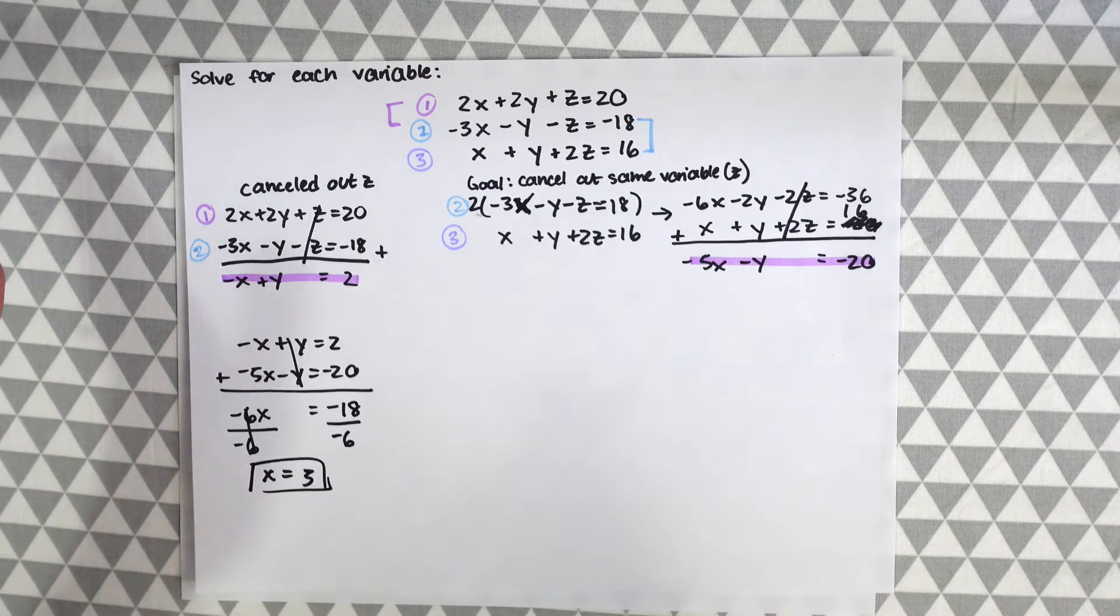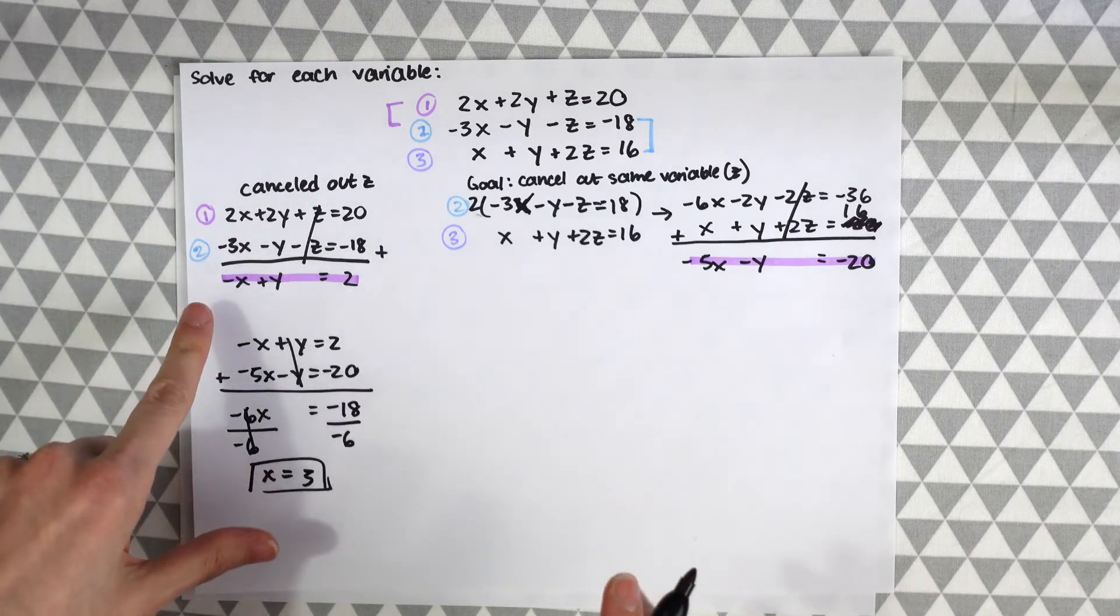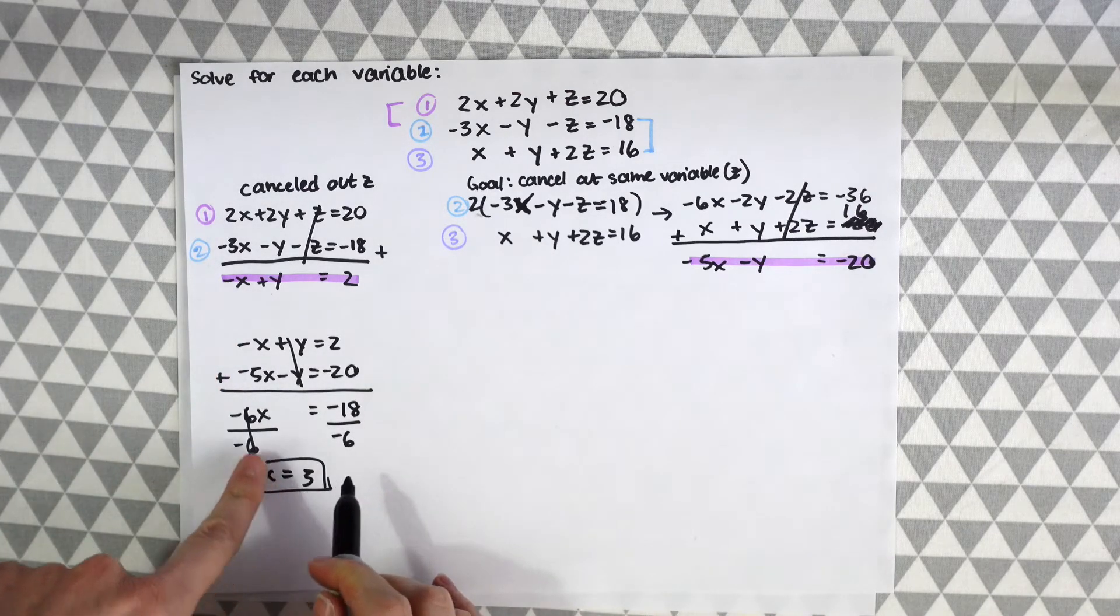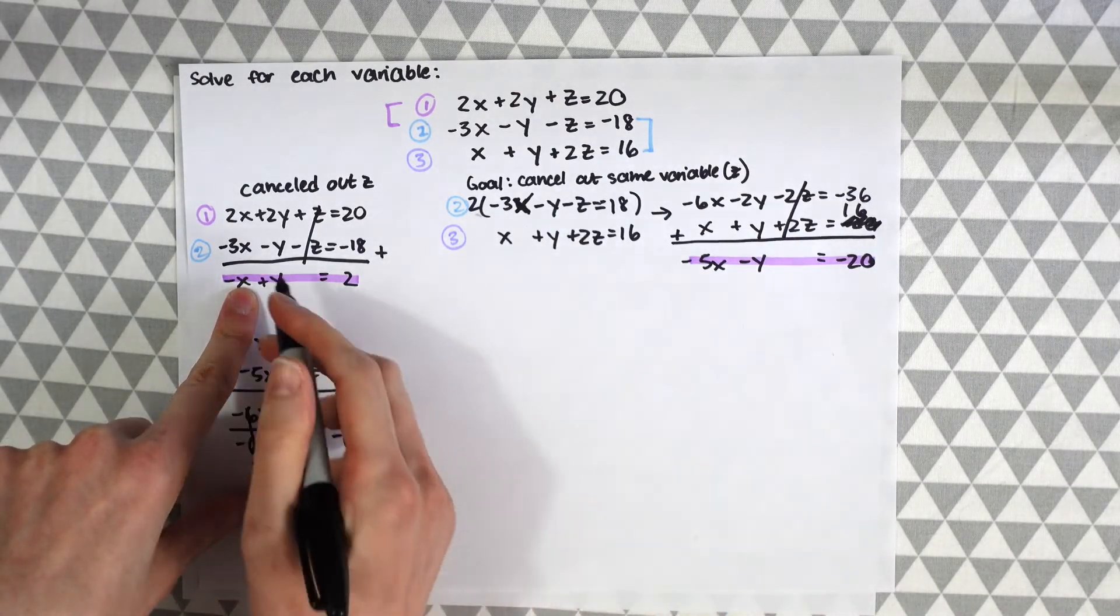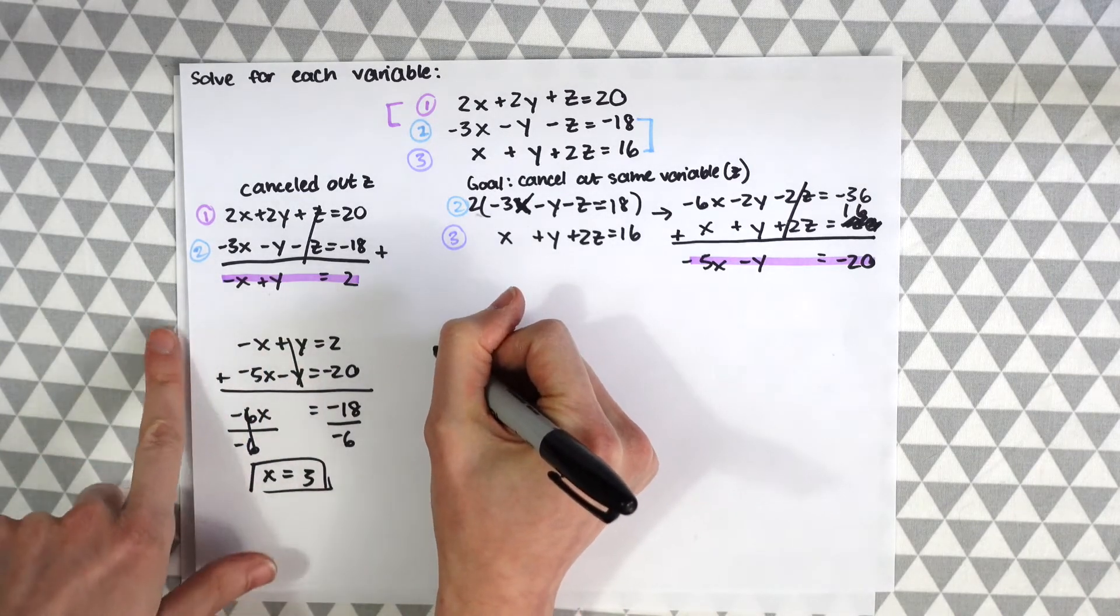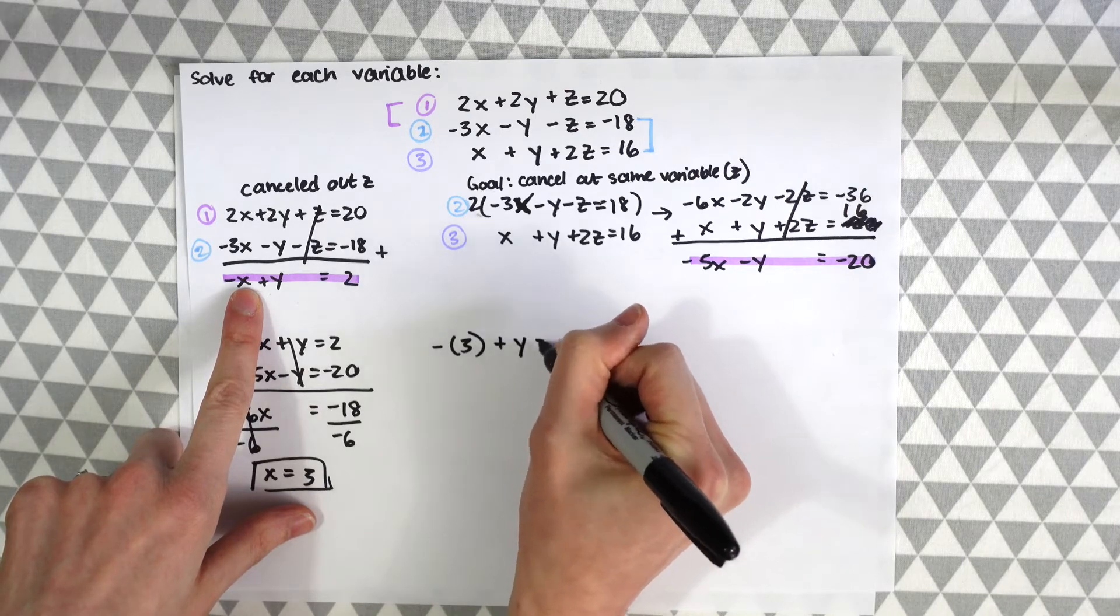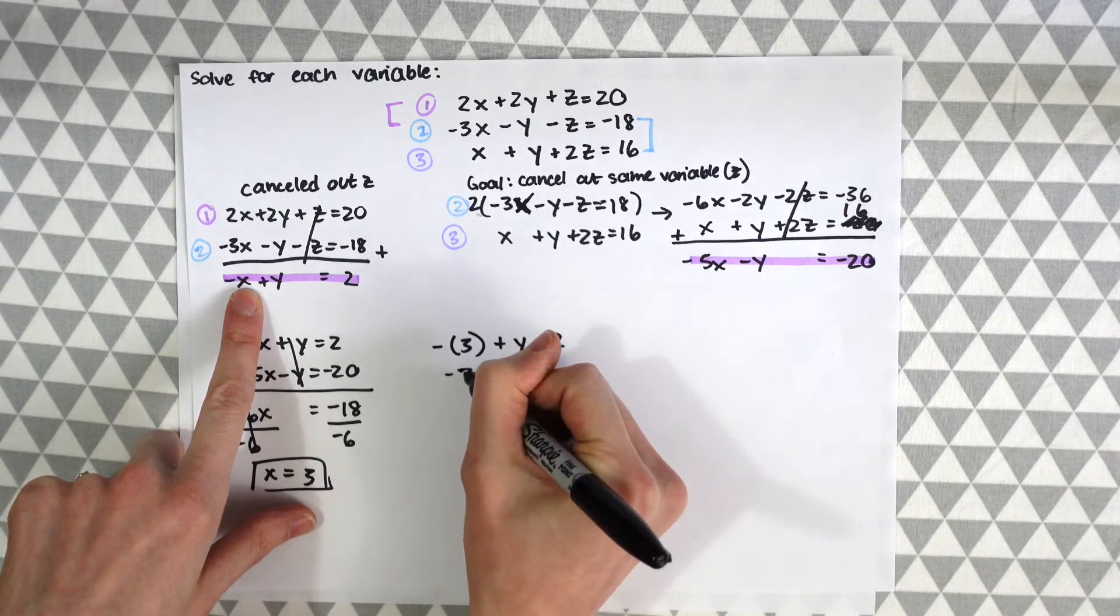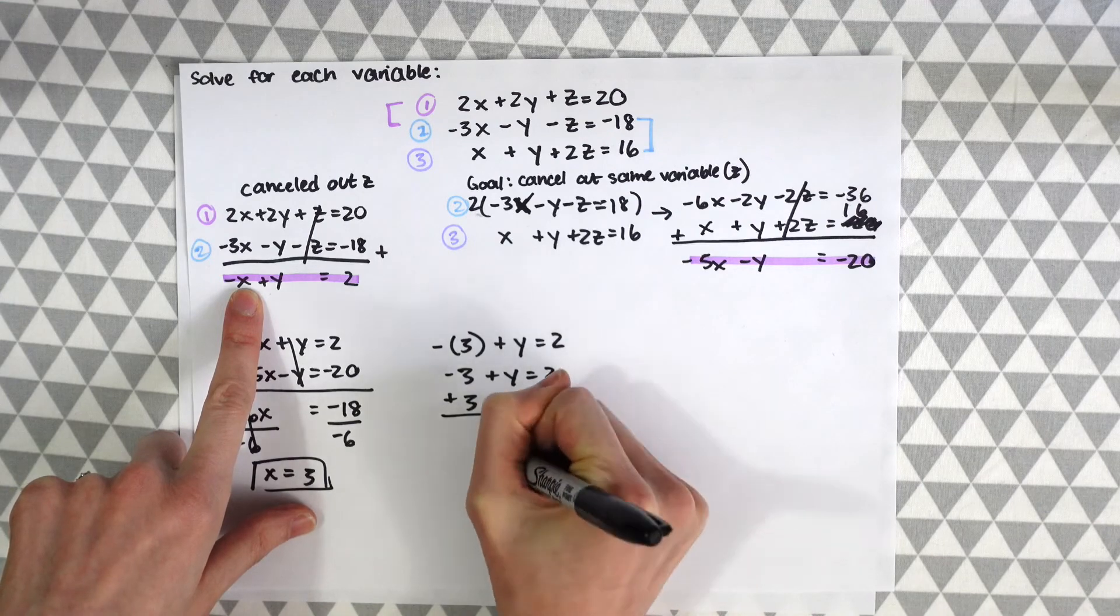So there's one answer, okay so we got somewhere finally. Now let's take our 3 and plug it back into one of our equations. Let's go with this one, so one of the equations we found in the last step. So we have negative 3, so this gives us y equals 5.